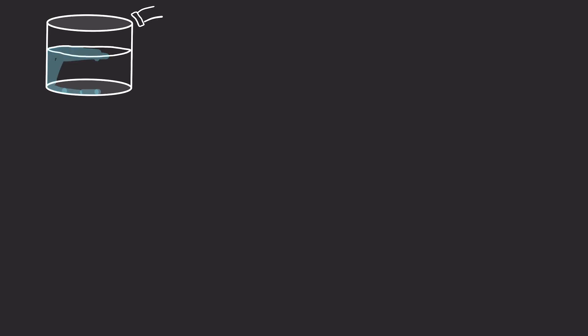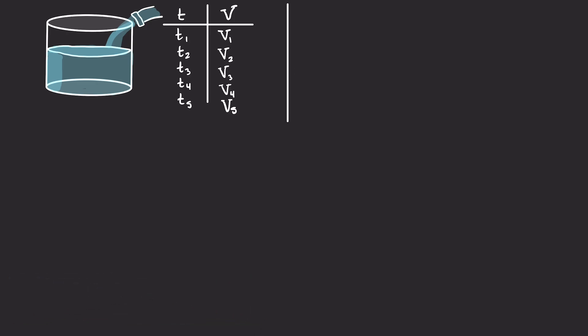Let's imagine that we have a system where we are tracking the amount of time that it takes to fill a bucket. As you can see, we are given 5 discrete data points, but we are interested in making a function that passes through all of our relevant data points.